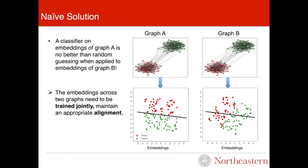Long story short, embeddings trained across the two graphs can be misaligned. This suggests that embeddings across graphs need to be trained jointly maintaining an appropriate alignment.